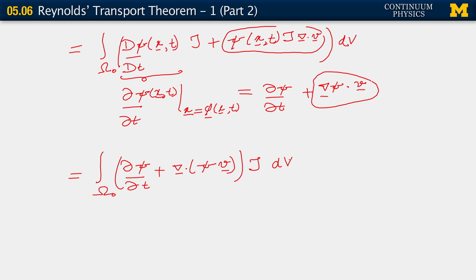And finally, we change variables back into the current configuration. So now we change variables again to omega sub t, and x comma t. What that means is that we go back to changing the domain of integration.